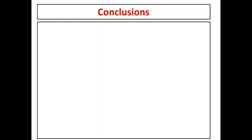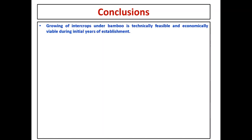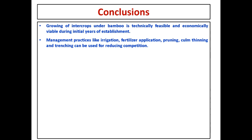Above and below ground biomass accumulation by bamboo can contribute significantly to carbon sequestration. Results revealed that bamboos are capable of sequestering 5 to 14.5 tonnes per hectare per year of carbon in above-ground biomass. In conclusion: analysis has revealed that growing crops under bamboo is technically feasible and economically viable during the initial years of establishment. The period of intercropping can be further expanded by adopting wider spacing. Management practices like irrigation, fertilizer application, pruning, culm thinning, and trenching can reduce competition and provide better yield. Bamboo silvipasture systems can be a cost-effective solution for non-arable lands. Before planting bamboo, quality and age of mother plants need to be ensured. Market development is a critical issue that needs to be addressed.